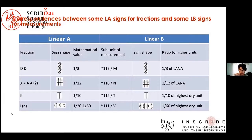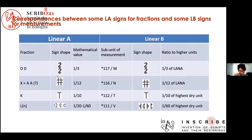Indeed, as you can see on this slide, the shape of the Linear A combination DD, whose suggested value is one-third, is identical to Linear B sign 117, which represents one-third of the largest weight measure for wool. The shape of Linear A fraction X, most probably equal to AA — that is, 1 over 12 — is identical to Linear B sign 116, which represents one-twelfth of the largest weight measure for wool.